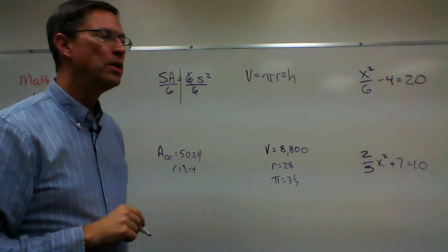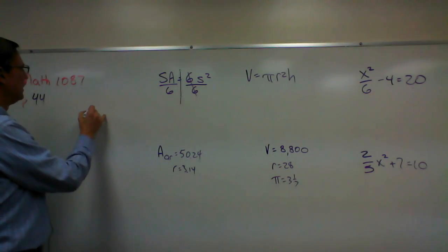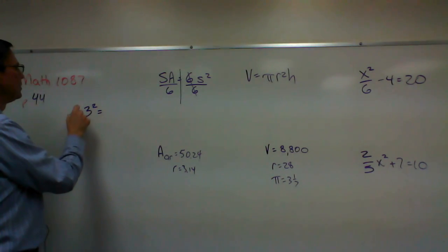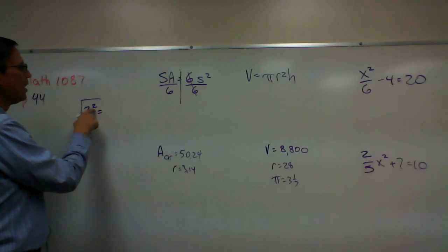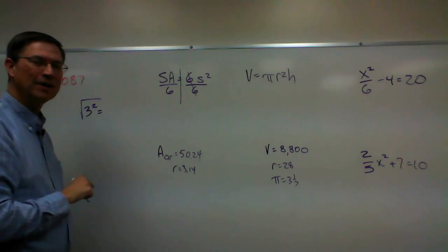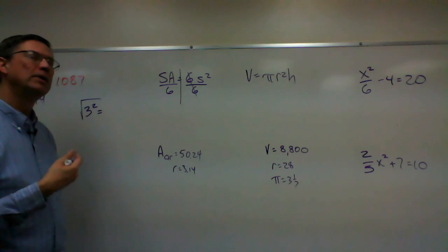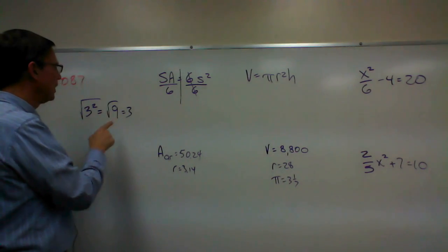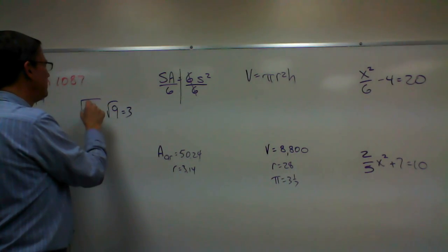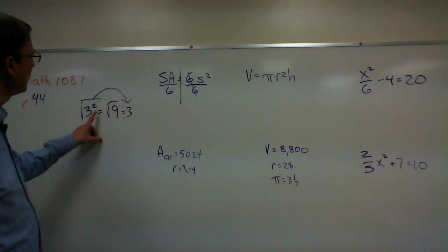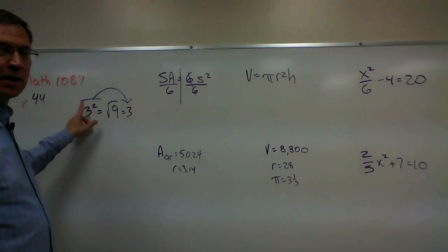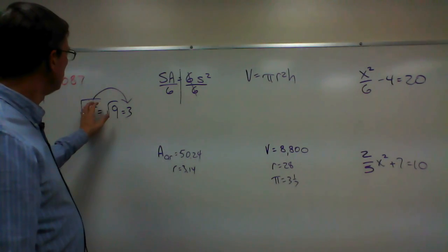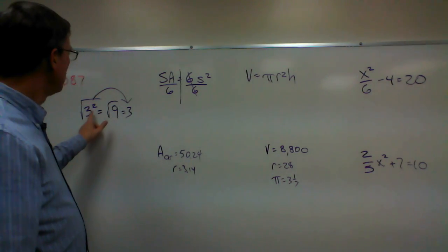Now, how do we undo something that's squared? Let's think about this. What is three squared? If I wanted to undo the square, I would do the square root of that. So I'm asking what number times itself equals nine. Three squared is nine, and the answer is three. But I could skip that step and say I can undo the square by doing the square root — they kind of cancel each other out.